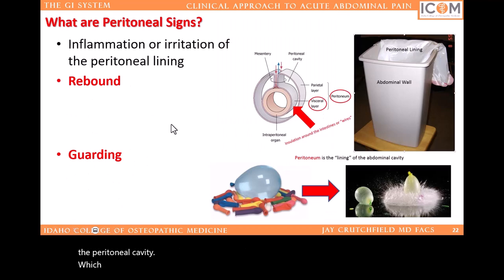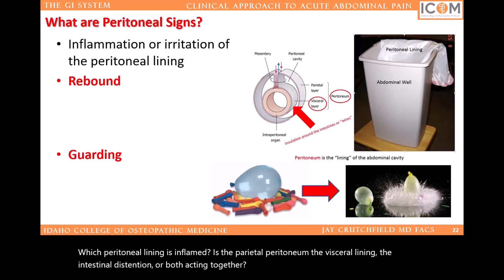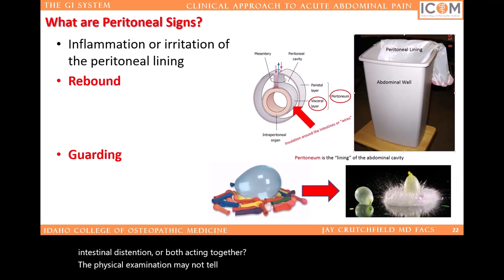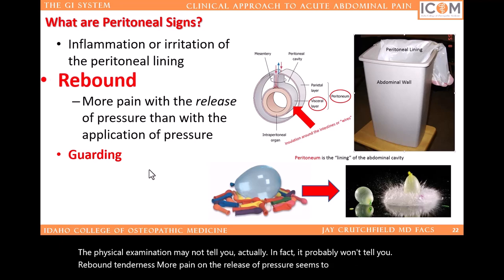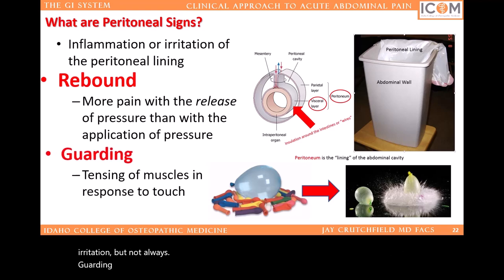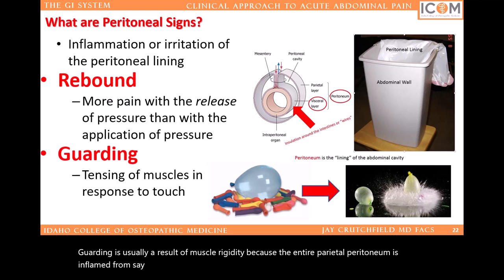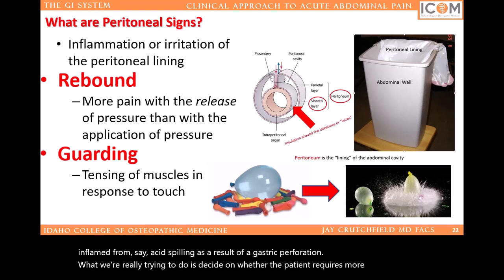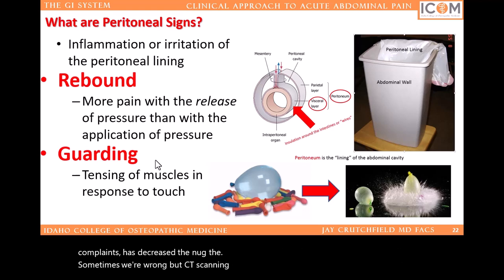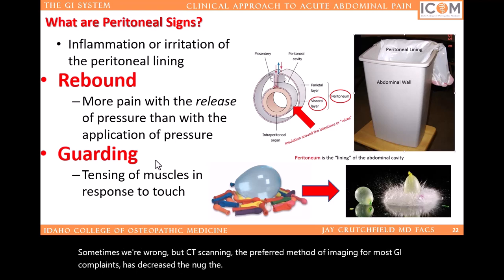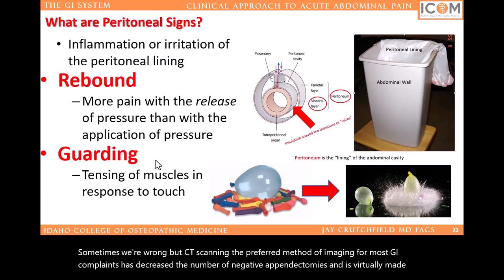Which peritoneal lining is inflamed — is it the parietal peritoneum, the visceral lining, the intestinal distension, or both acting together? The physical examination may not tell you — in fact, it probably won't. Rebound tenderness — more pain on the release of pressure — seems to suggest visceral irritation, but not always. Guarding is usually a result of muscle rigidity because the entire parietal peritoneum is inflamed from, say, acid spilling as a result of a gastric perforation. What we're really trying to do is decide whether the patient requires more imaging or a trip to the operating room without any further diagnostic intervention. CT scanning — the preferred method of imaging for most GI complaints — has decreased the number of negative appendectomies and has virtually made the exploratory laparotomy a thing of the past.